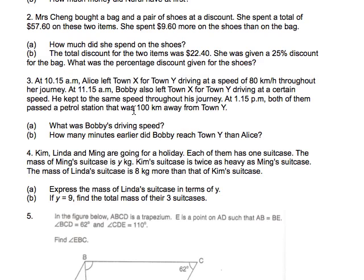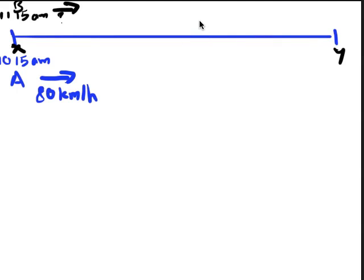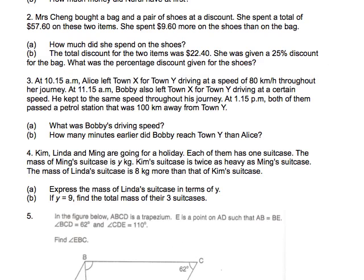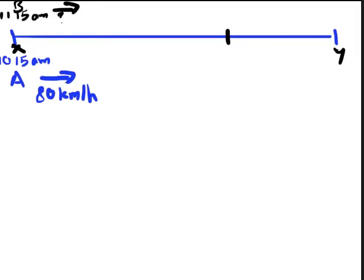And then we find out later that he kept to the same speed throughout his journey. At 1:15 PM, both of them passed a petrol station that was 100 km away from town Y. Which means that both of them passed a petrol station along the way, not after, but along the way. So I don't know where it is, but I'm just going to put somewhere here. Do I know this distance? No, I don't. But do I know this distance? Yes, I do. 100 meters away from town Y. So 100 km away would look something like that.